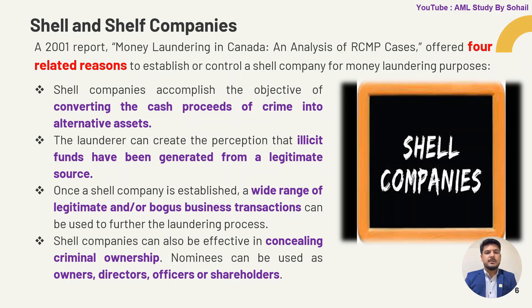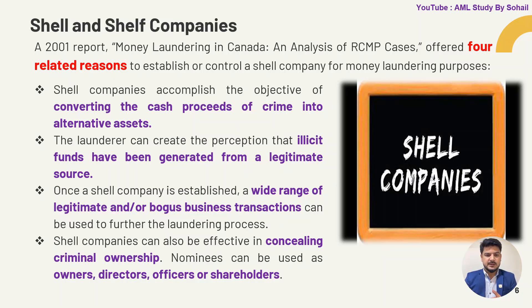A 2001 report on money laundering in Canada analyzing RCMP cases offered four related reasons to establish or control a shell company. The first is that a shell company accomplishes the objective of converting cash proceeds of crime into alternative assets. For example, a person who owns a petrol pump and also earns money from drug business can convert that amount into another asset. The launderer can create the perception that illicit funds have been generated from legitimate sources.